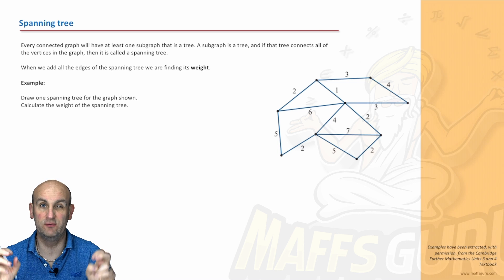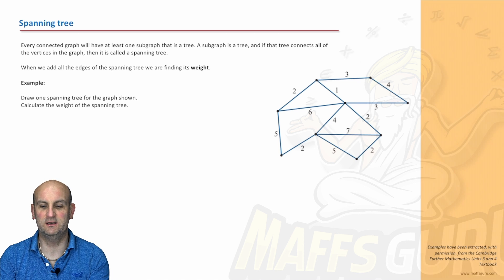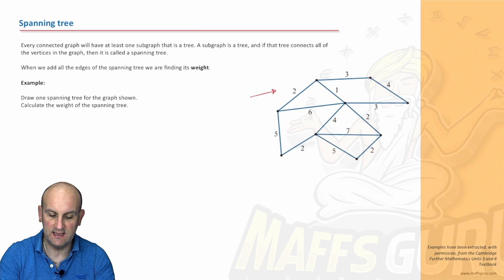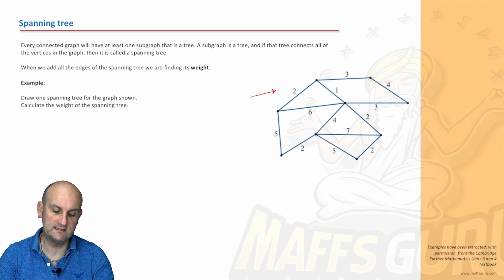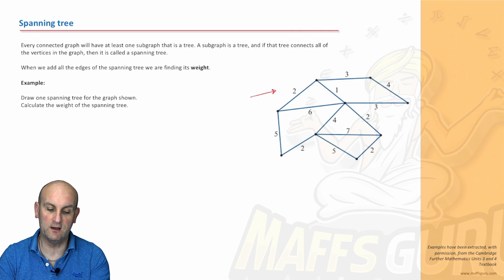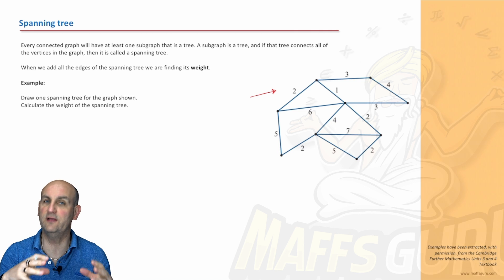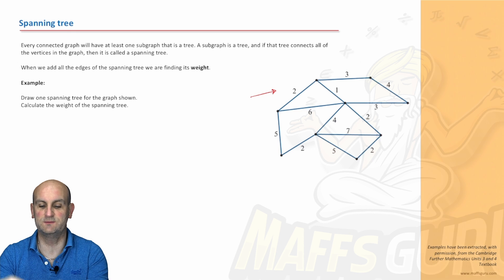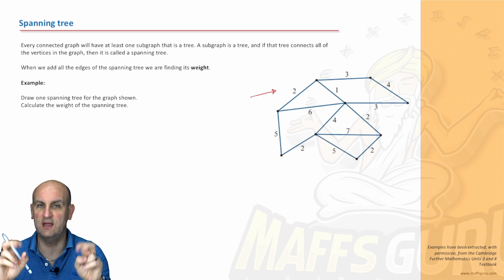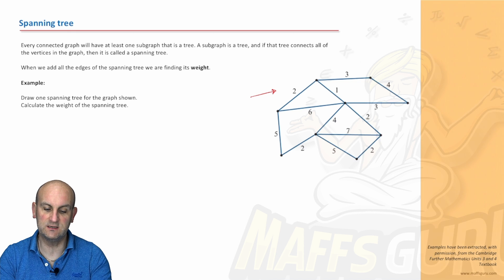A spanning tree takes a particular network and gets rid of redundancy so we can travel from any node to any other node, but only in one direction. Every connected graph will have at least one sub-graph that is a tree — a sub-graph is where you take a section out without adding extra connections, just removing the edges you don't need.